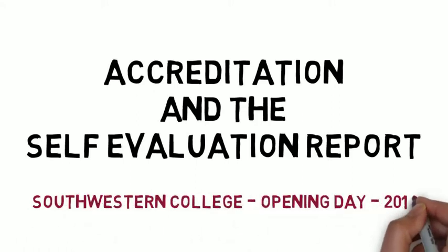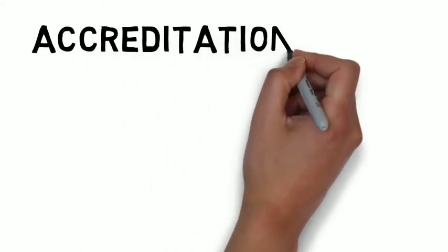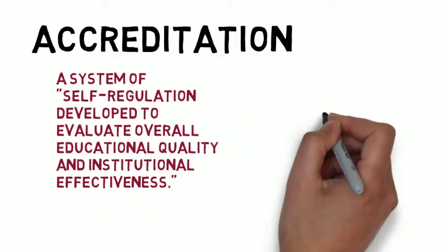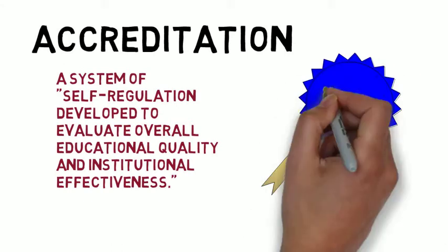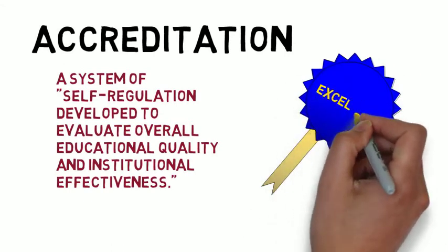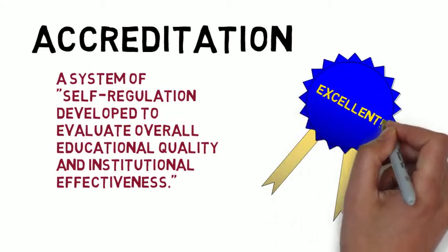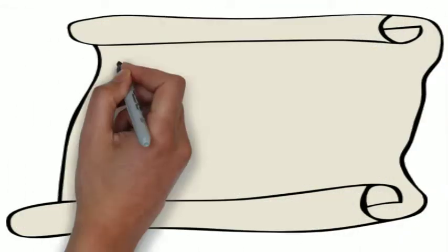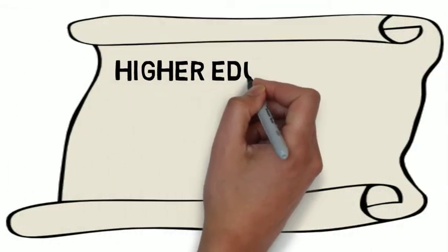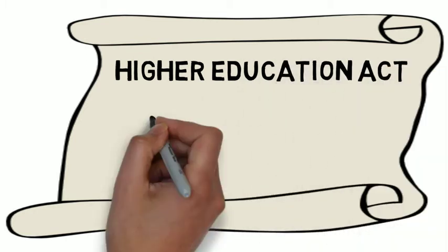Accreditation and the self-evaluation report. What is accreditation? Accreditation is a system of self-regulation developed to evaluate overall educational quality and institutional effectiveness of an institution. Accreditation begins with the Higher Education Act, which is federal legislation.